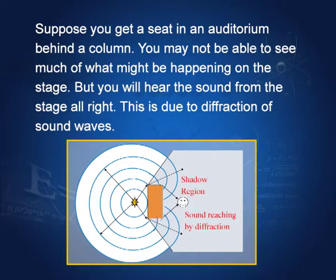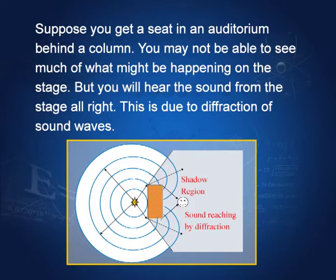Suppose you are in a hall where a music concert is going on and you get a seat behind a column or pillar. Would you be able to hear? Yes, you will hear the sound, although you will not be able to see what is happening on the stage. You will not see, but you will hear what is happening. This is because of the diffraction of sound — the sound bends around these edges and reaches you.